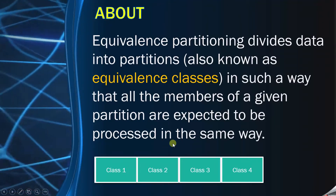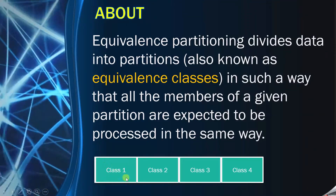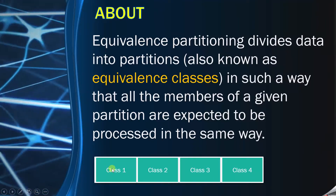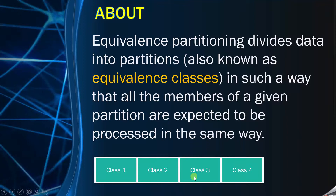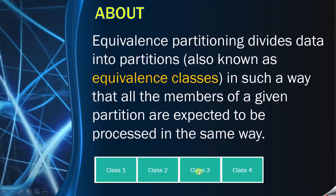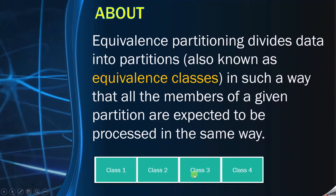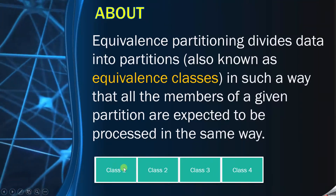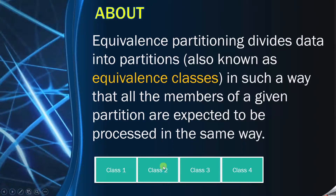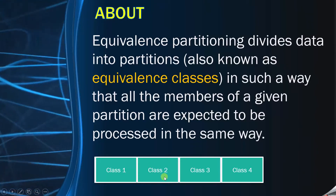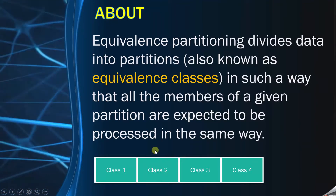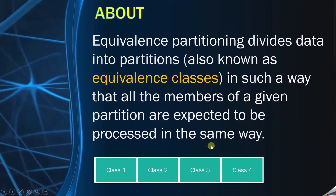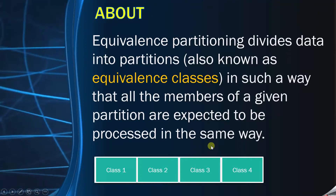What they are saying here is: if you take any data from class 1, then the behavior will be similar. If you take any data from class 3, then also the behavior will be similar to the data which are there in class 3. Though the behavior of data in class 1 and behavior of data in class 2 may differ, but if you take data from the same class, the behavior will be the same. And that we will also see in the example.